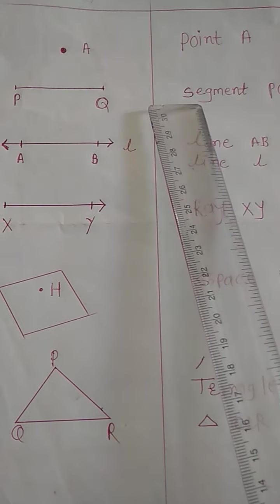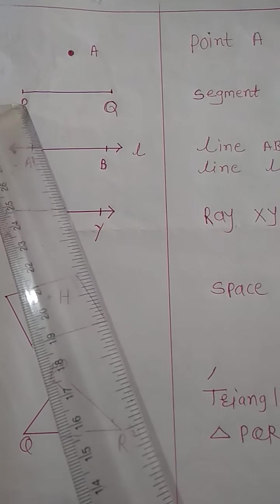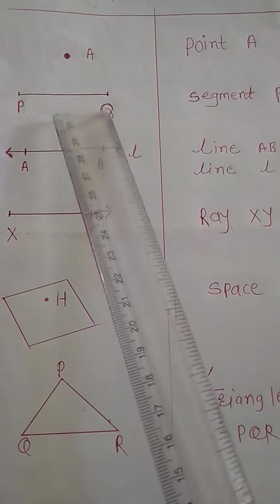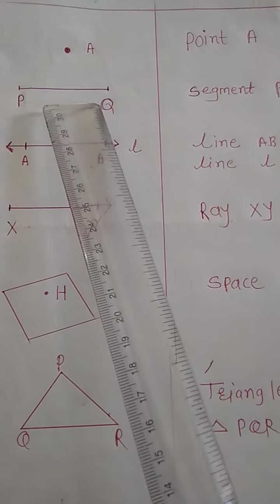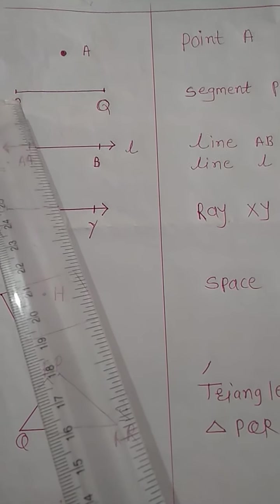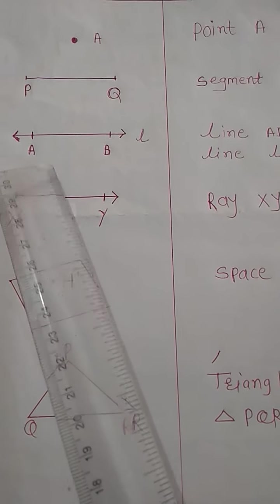Then, segment. Segment is a part of a line. Here, point P and point Q are the endpoints of a segment. Segment is read as segment PQ or segment QP.